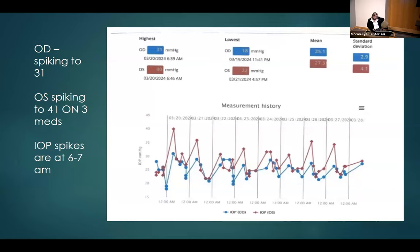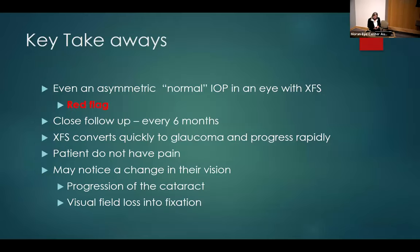She's also spiking early in the morning — which we're classically seeing in glaucoma and exfoliation patients — and they tend to spike higher in exfoliation. The key takeaways: even if it's an asymmetric normal IOP, if there's exfoliation, it's a red flag. Think about following that patient more closely — have them come back first thing in the morning. They definitely need to be followed at least every six months, if not sooner. They can also convert rapidly to glaucoma. They can progress rapidly, go on to have vascular events in the back of the eye — probably because of these horrible spikes — and are more likely to have central retinal vein occlusions and ischemic optic neuropathies. They don't have pain, so a lot of times they come in just noticing a change in vision. Visual field loss can go into fixation very quickly.